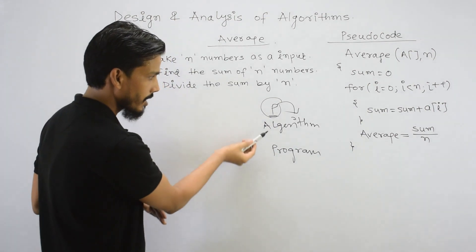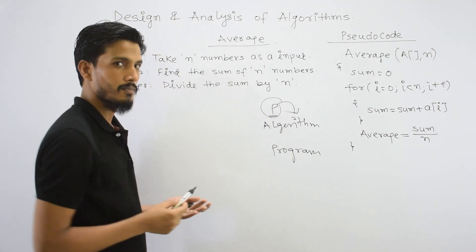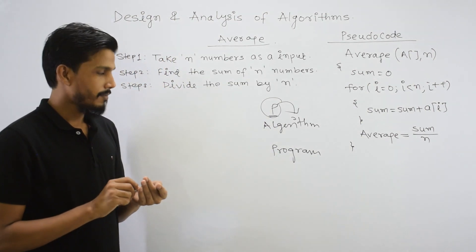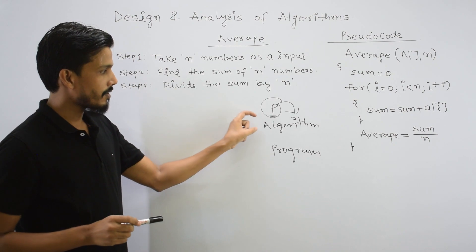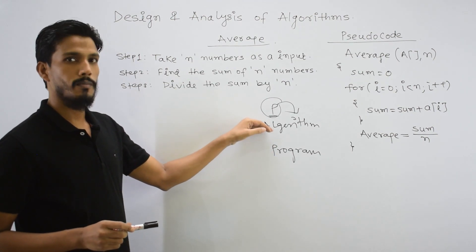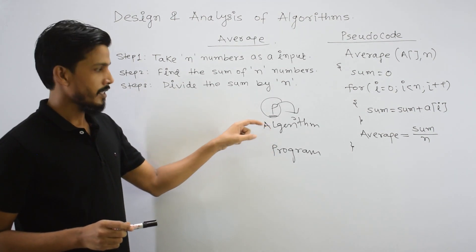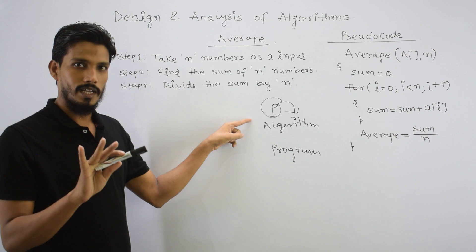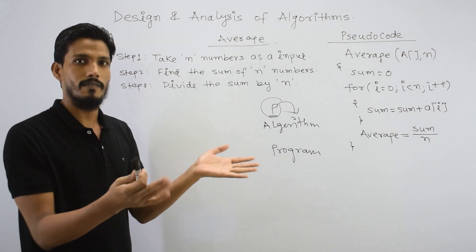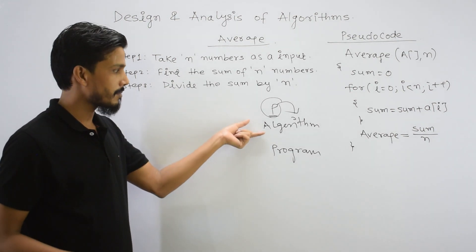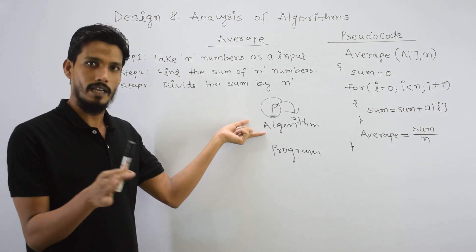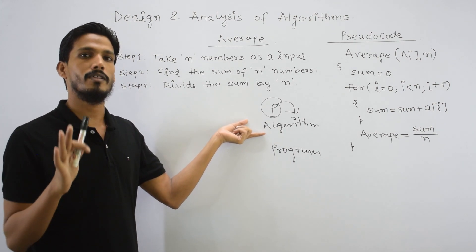We convert the algorithm into a program. Algorithm is one way — it is a blueprint. Algorithm is not written in a programming language like C, C++, or other languages. It is simply written in plain English or any natural language.